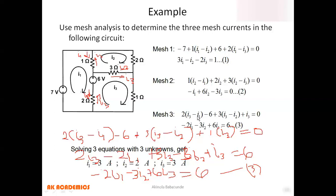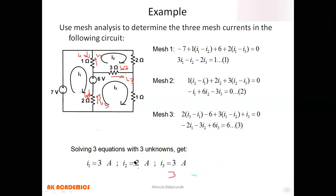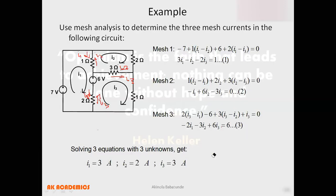We now have three equations and three unknowns. Using any method of simultaneous equations — Cramer's rule, substitution, etc. — we solve to obtain I1 equals three amperes, I2 equals two amperes, and I3 equals three amperes.